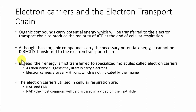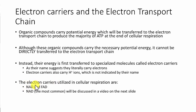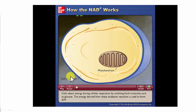Electron carriers are, as the name indicates, molecules that literally carry electrons. They also carry hydrogen ions — usually a proton and one or two electrons simultaneously. We call them electron carriers because electrons are one of the primary things they carry. The two most common, relevant to cellular respiration, are referred to as NAD and FAD — abbreviations for larger names. NAD is the most common and most prevalent in cellular respiration, though both are used throughout. Here's a quick video giving an idea of how these work.